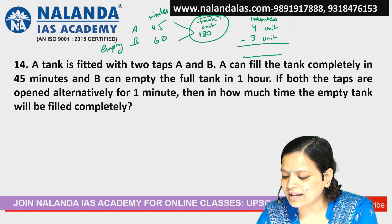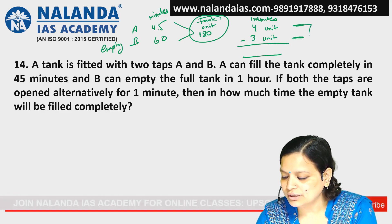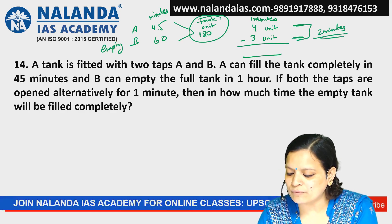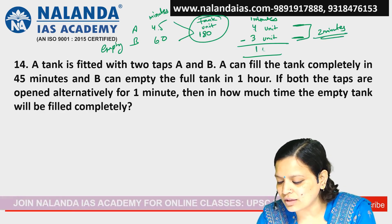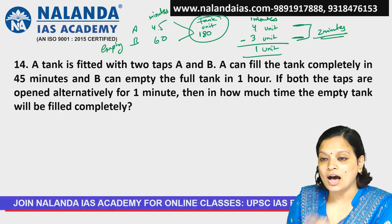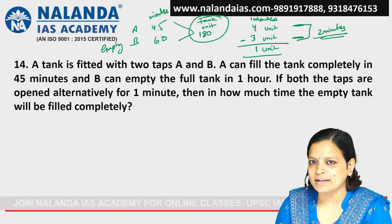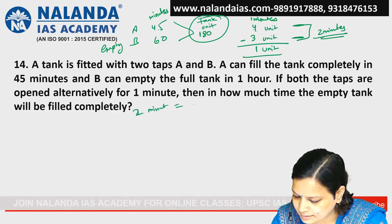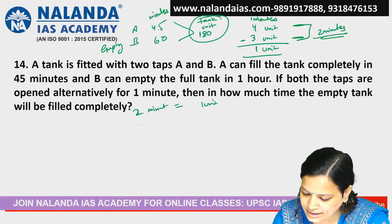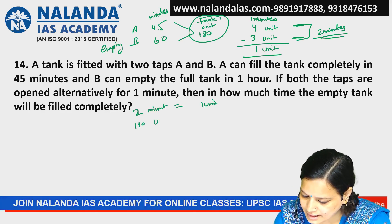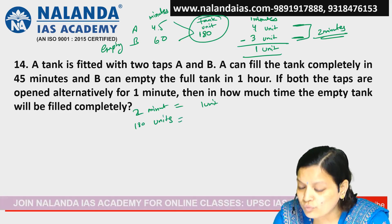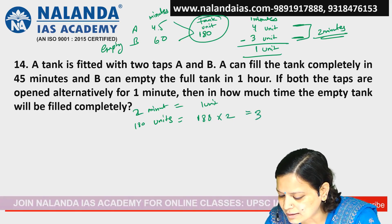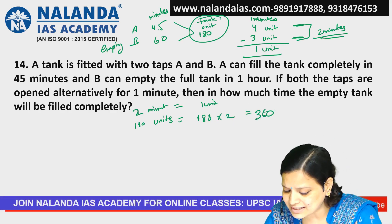We take 2 minutes alternatively — A goes one minute, then B the next. So in 2 minutes, net filled is 4 minus 3, which means 1 unit is filled per 2-minute cycle. To fill 180 units, multiplying 180 by 2, you would expect 360 minutes.